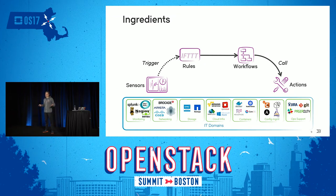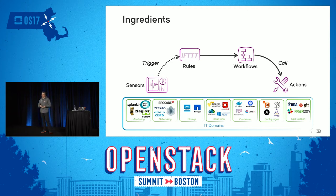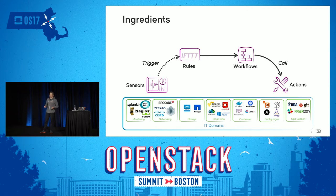The main ingredients of StackStorm: it's an open source platform that sits on top of your existing infrastructure. You have clouds, Kubernetes, Docker, OpenStack, Amazon. You have the typical DevOps tools like Chef, Puppet, Ansible. You have a lot of scripts. You have business tools like Slack, Jira, or GitHub.